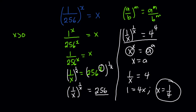We can verify: (1/256)^(1/4) means we are finding the fourth root of 1/256, and we get 1/4, which matches the right-hand side. Thank you so much for watching. Please let me know your thoughts in the comment section, and I'd welcome any other approach. If you haven't subscribed yet, please do so. Bye bye.